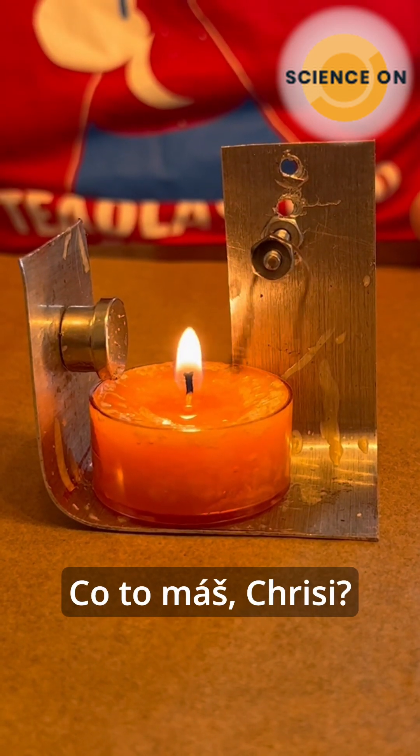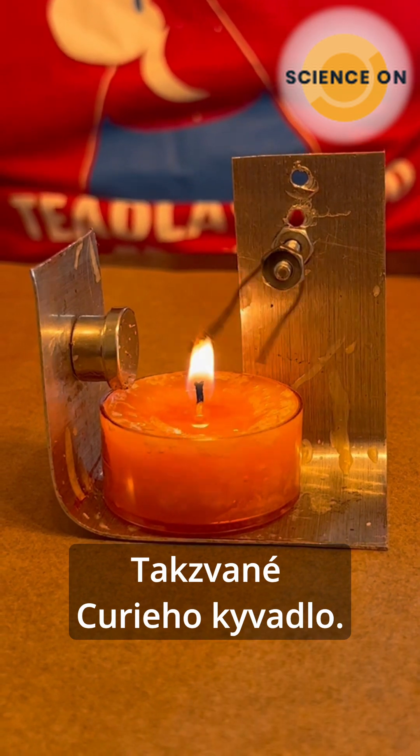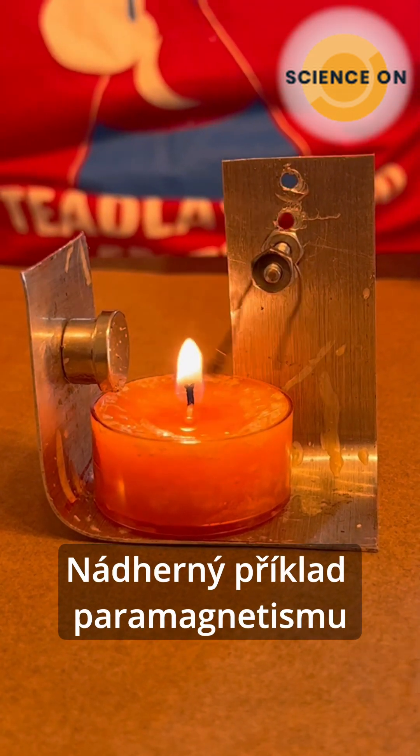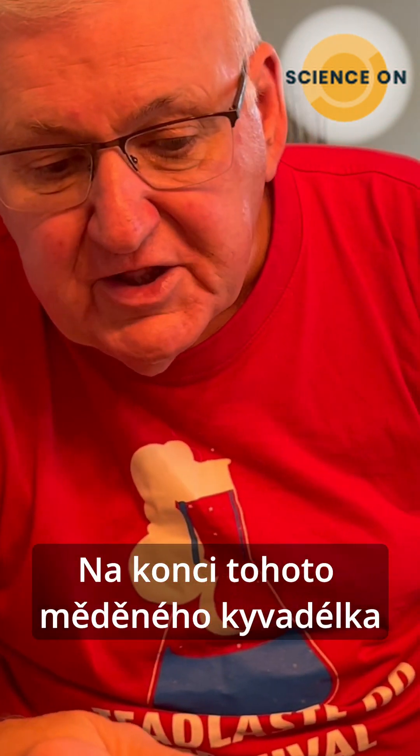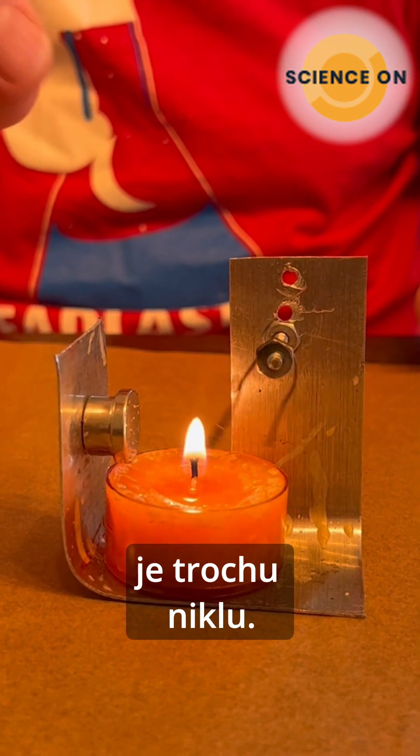Chris, what have we got going here? We have what's known as a Curie point engine. And it's a beautiful example of both paramagnetism and ferromagnetism. At the end of this little copper pendulum is a sample of nickel.